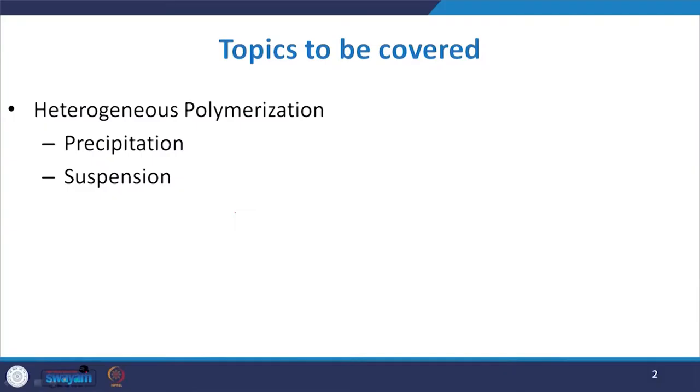Welcome to the new chapter of Heterogeneous Polymerization. Usually, the polymerization process is carried out in two different phases: heterogeneous and homogeneous. The heterogeneous phase is very important especially with respect to industrial applications. In this introductory lecture, we are going to give some insights into the heterogeneous polymerization process. We will discuss two broad spectrums: precipitation and suspension.